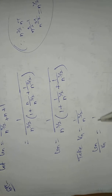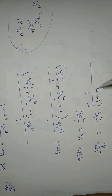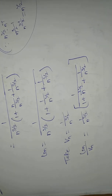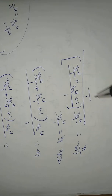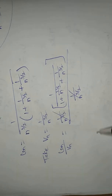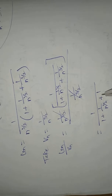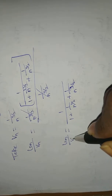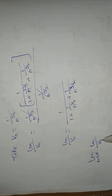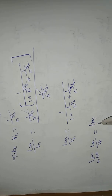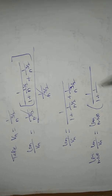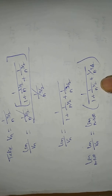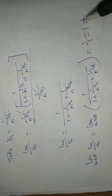Then uₙ/vₙ = (1/n^(3/2)) / (1 + 1/n^(1/2) + 1/n^(3/2)) divided by (1/n^(3/2)), which cancels to give 1 / (1 + 1/n^(1/2) + 1/n^(3/2)). Taking the limit as n tends to infinity — since 1/n → 0 — this equals 1/1 = 1, which is not equal to 0.